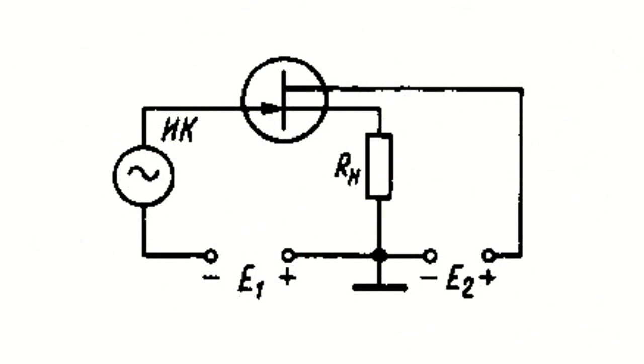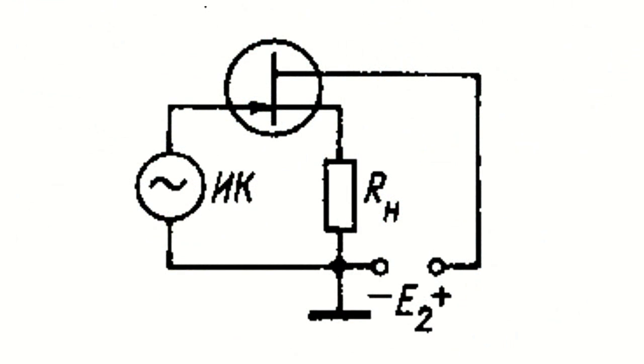The common drain stage is similar to the emitter follower and may be called a source follower. The voltage gain of the stage is close to unity. The output voltage in its value and phase is identical to the input. Such a stage is characterized by a relatively low output resistance and an increased input resistance. In addition, the input capacitance is reduced significantly, which promotes an increase in the input resistance at high frequencies. In the common source circuit with power supply from a single source, a constant negative voltage from the load resistors is applied to the gate.